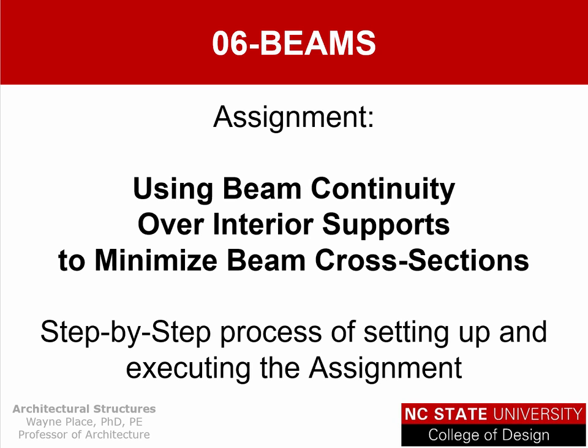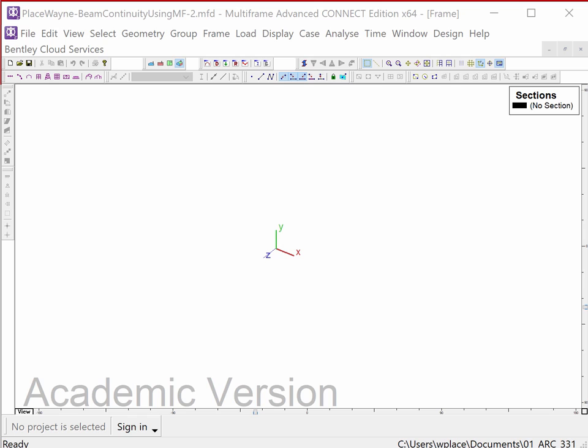This is our second assignment using Multi-Frame to explore the effects of beam continuity over interior supports. In this assignment, we're going to use beam continuity over interior supports to minimize beam cross sections. In the previous assignment we used beam continuity as a way of minimizing deflection; in this case we're going to look at optimizing beam cross sections for bending strength.